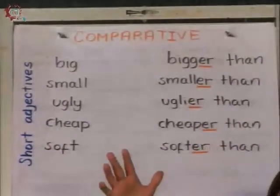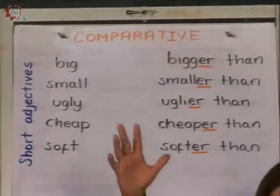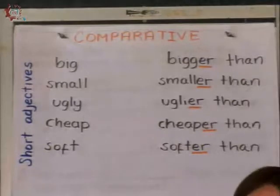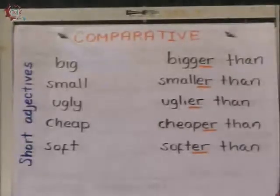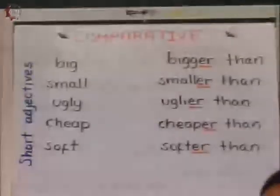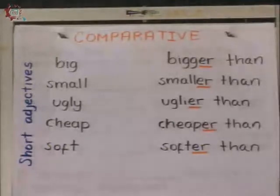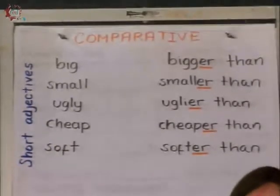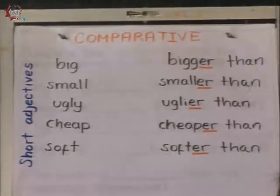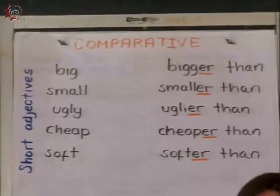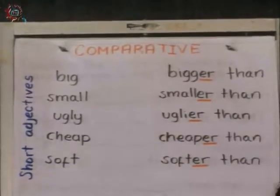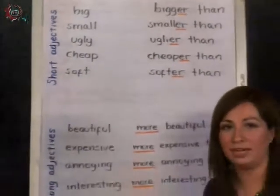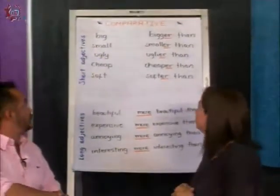What's the meaning of big? Grande. That's right. Small — pequeño. Ugly — feo. Cheap — barato. That's right. Soft — suave. That's right. Muy bien. Entonces, si escuchamos el sonido, vamos a identificar que nos estamos refiriendo a adjetivos cortos.